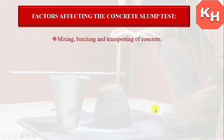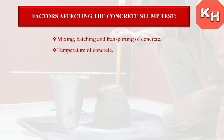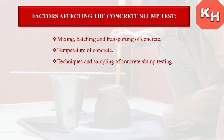Now we check the factors affecting the concrete slump test. These include: mixing, batching, and transportation of concrete — how you mix, how you batch, and how you transport the concrete, including the distance from batching plant to site. Also: temperature of concrete, techniques and sampling of concrete slump testing — the slump test must be taken accurately.